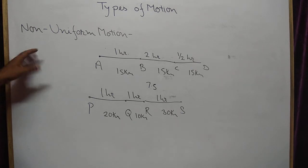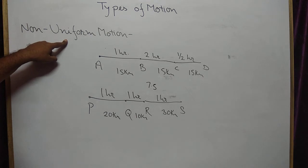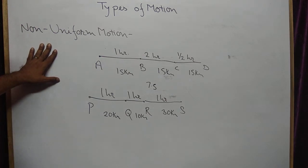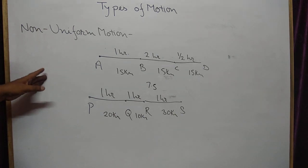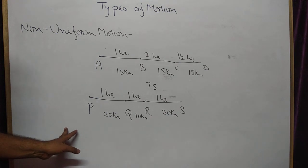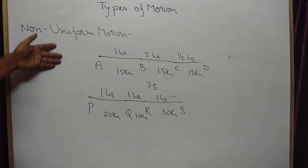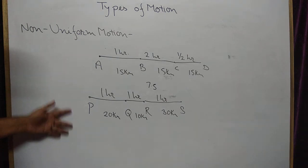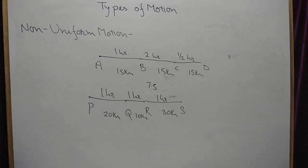Hope this is clear to you. The reason uniform and non-uniform motion are important is that in the next part of this chapter we will discuss uniform and non-uniform velocity as well as speed, and these two concepts will be required again. So it's good that you have cleared the concept of uniform and non-uniform motion in this video. See this video carefully, try to read your book. That's all for today. Thank you.